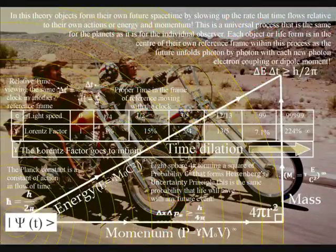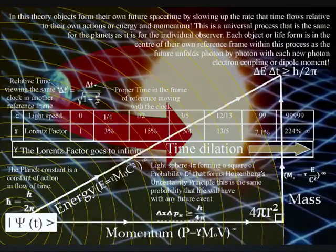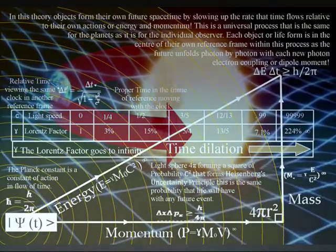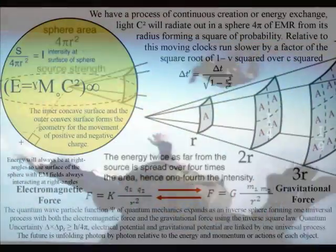As part of an emergent process, energy slows the rate time flows, forming the time dilation of Einstein's relativity, with the curvature of space-time representing a geometrical reason for gravity as part of one universal process. I will place links here that explains this in greater detail.